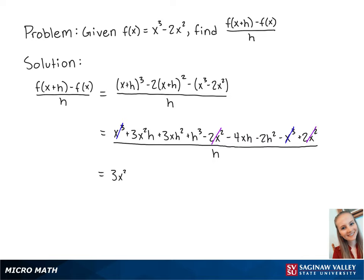Now we have 3x squared h minus 4x h plus 3x h squared minus 2h squared plus h cubed all over h.